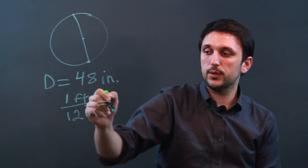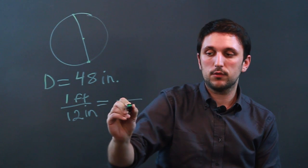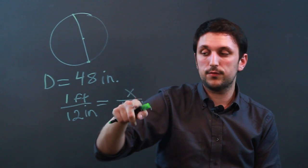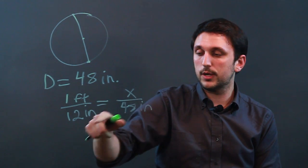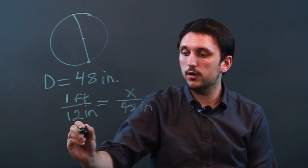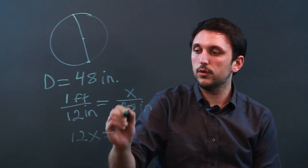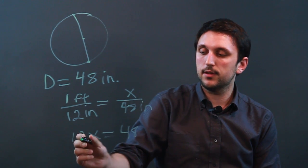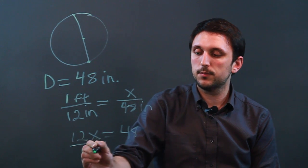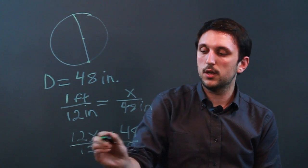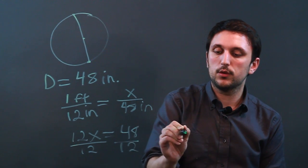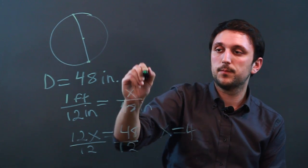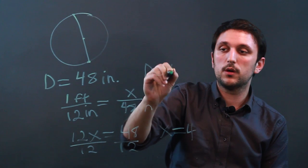So we say okay well we have 48 inches and we want to know the feet. So we have a proportion, we cross multiply and we say 12x equals 48 times 1 and divide each side by 12 and we get x equals 4. So in this case the diameter equals 4 feet.